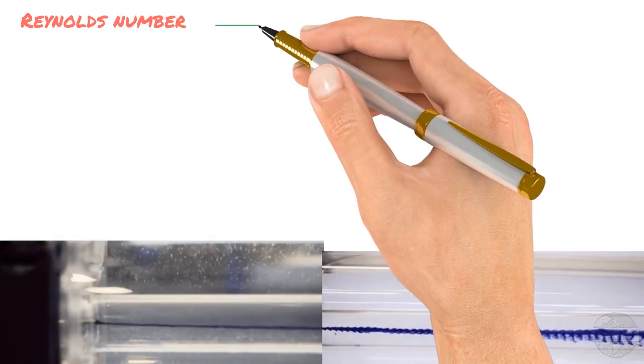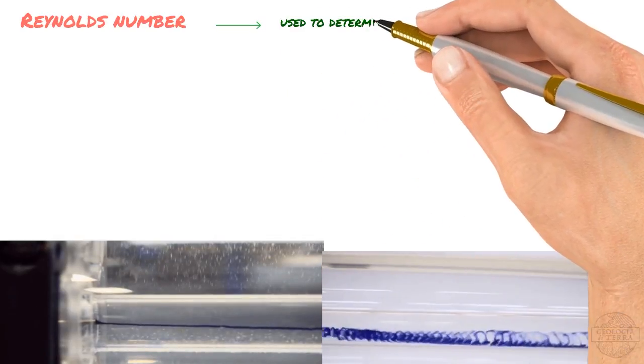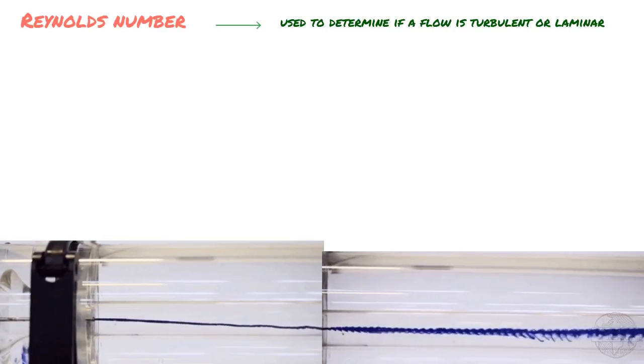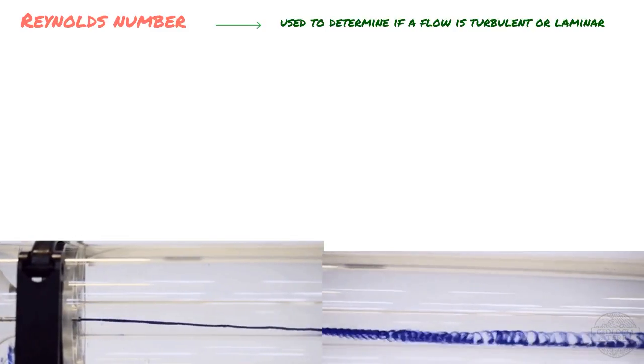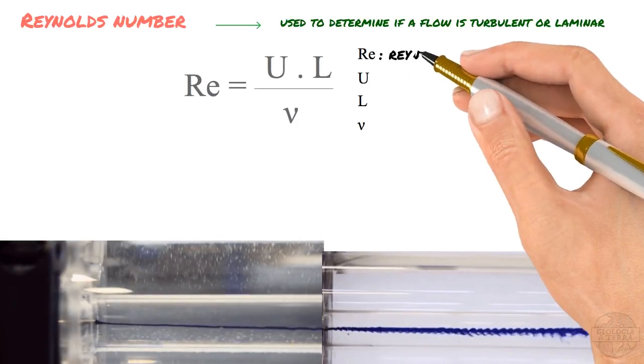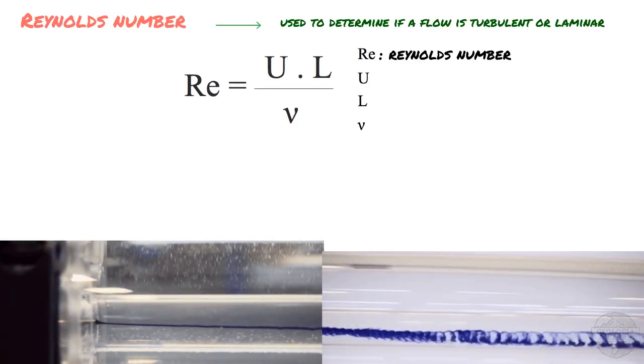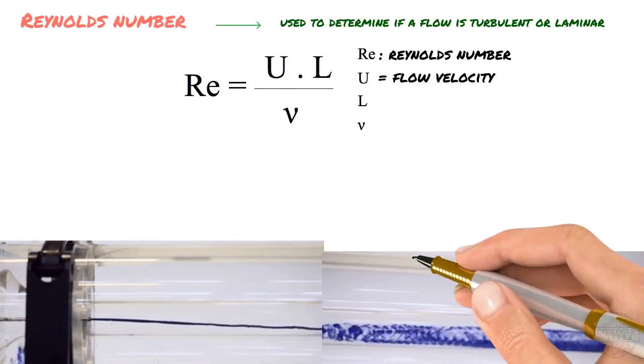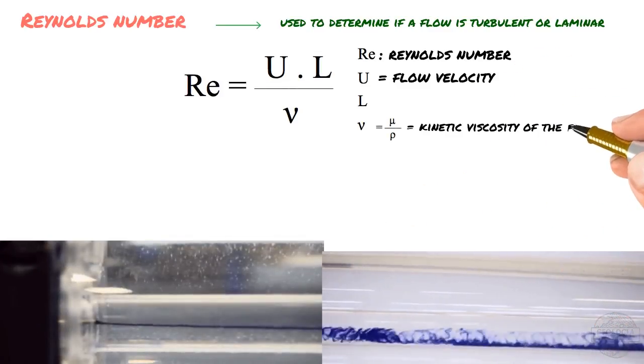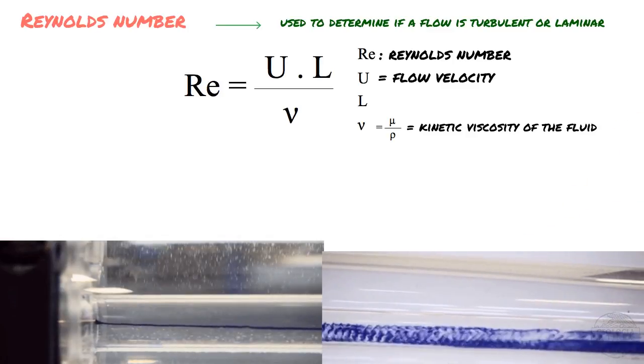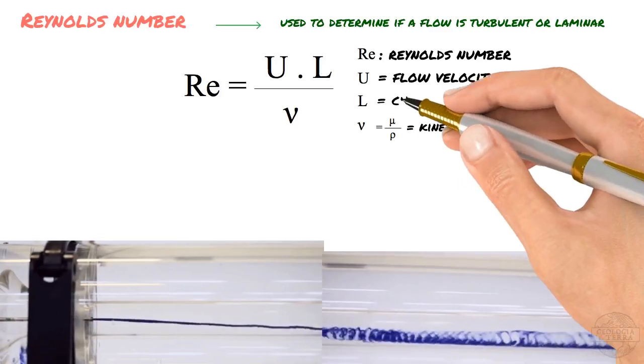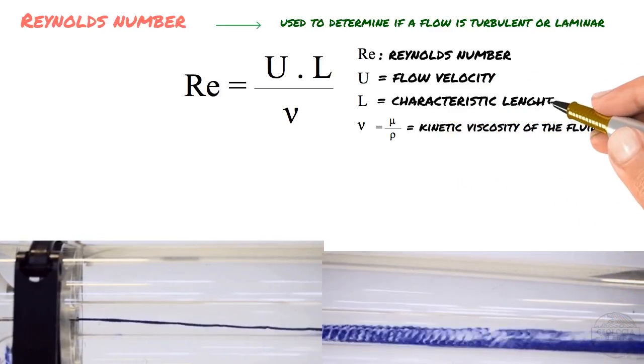Now, if we want to determine if a flow is turbulent or laminar, we use the Reynolds number. This number is a parameter developed by Osborne Reynolds in the late 19th century. It is a number that represents a quantity without dimensions, relating three factors: the flow velocity, the kinetic viscosity of the fluid, which is the ratio of fluid viscosity to fluid density, and a characteristic length L, which may be the diameter of a barrel or the depth of a flow in an open channel.